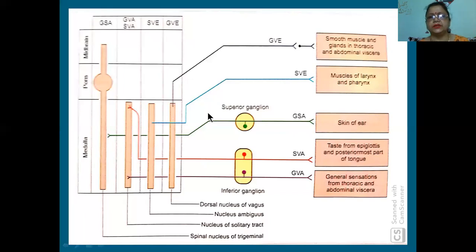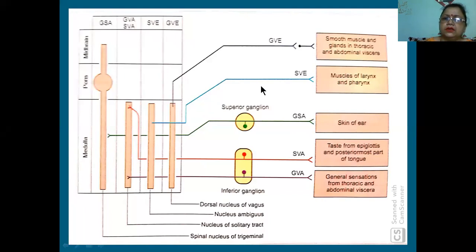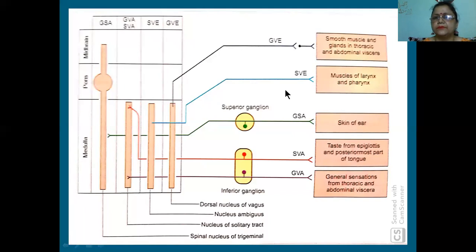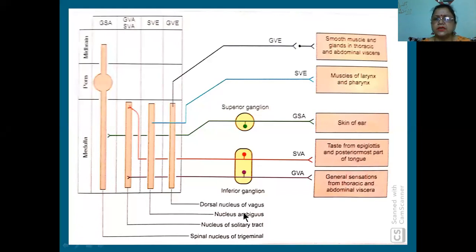Cricothyroid is supplied by the superior laryngeal nerve, but all the muscles of the vocal cord are supplied by the recurrent laryngeal nerve. The mucous membrane of the vocal cord is supplied by the internal laryngeal nerve. Muscles of the larynx and pharynx are both special visceral efferent, related to nucleus ambiguus.